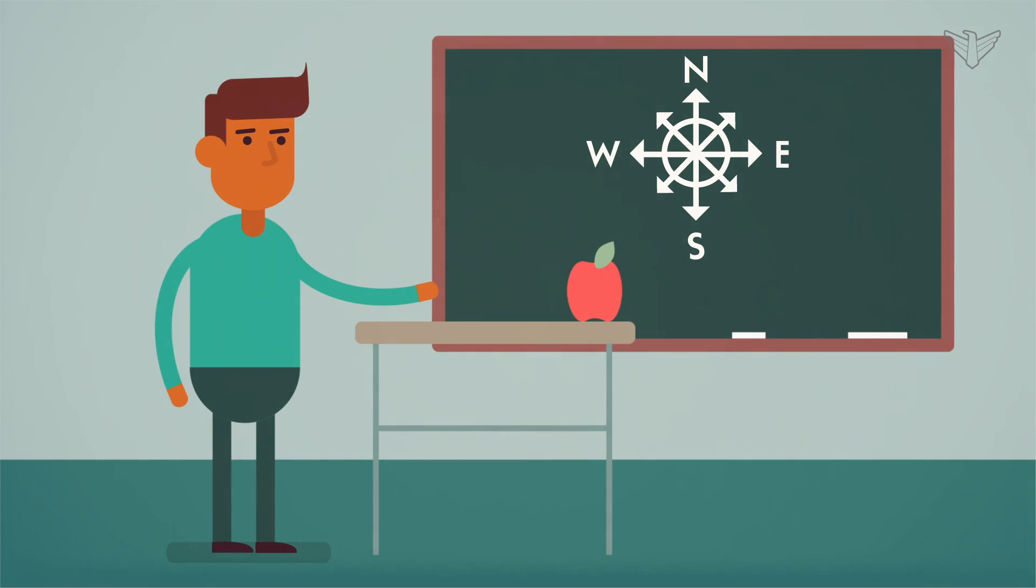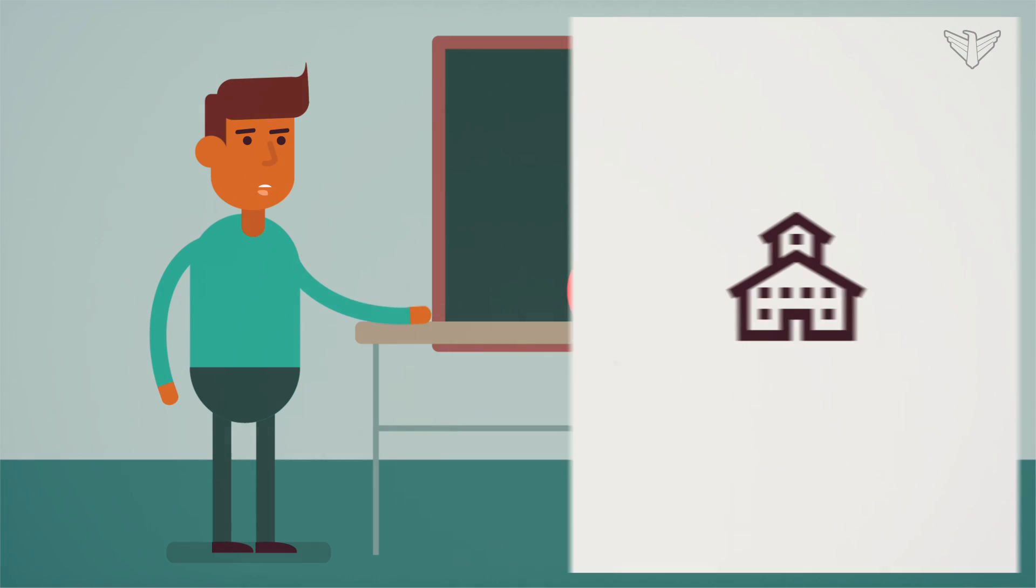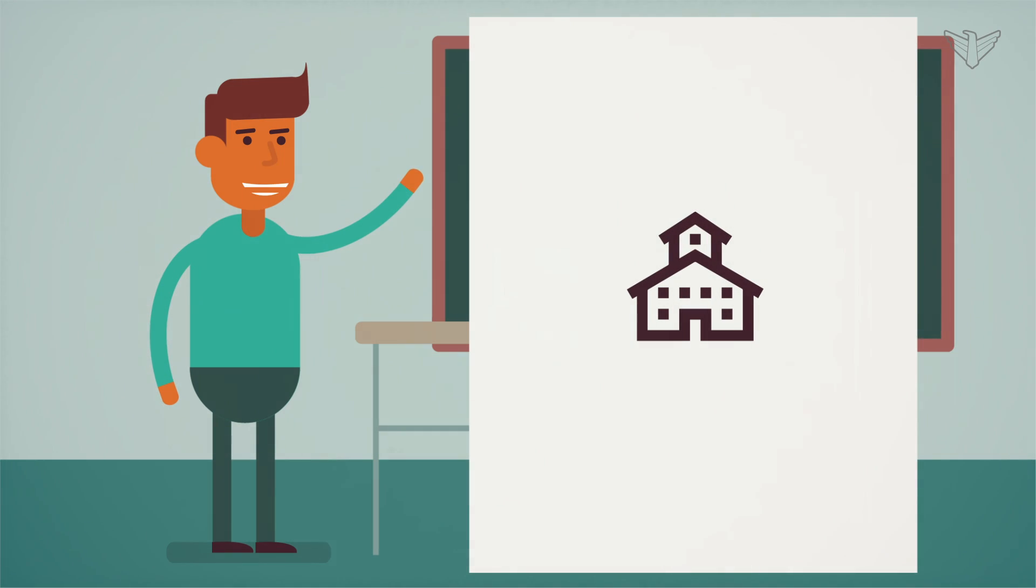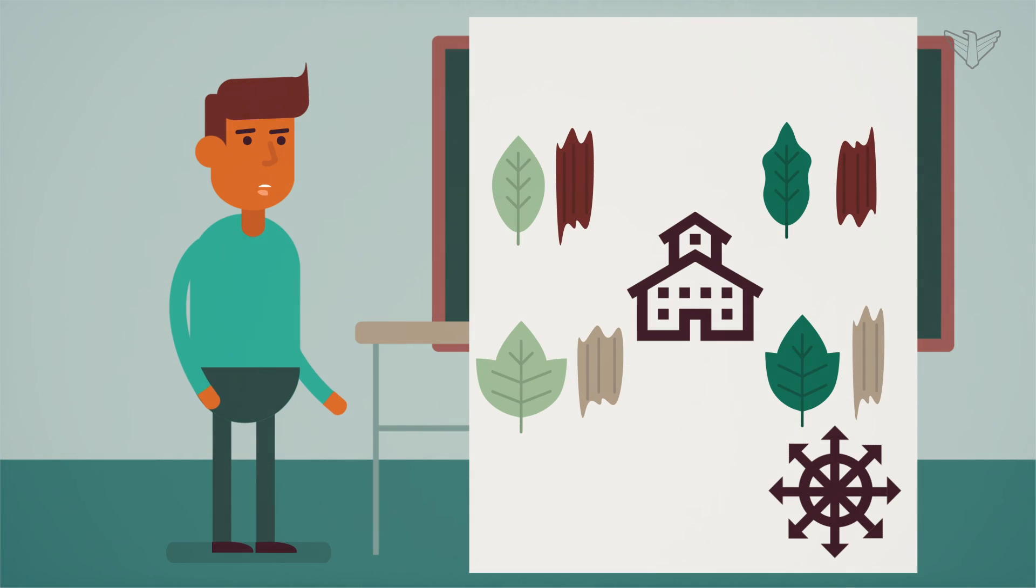Then we glued them on a large piece of construction paper. In the middle we drew a small school with a compass rose around it that showed the cardinal and intermediate directions. In each corner we glued the leaf and the bark rubbing and the name of the tree that we found at each of the locations.